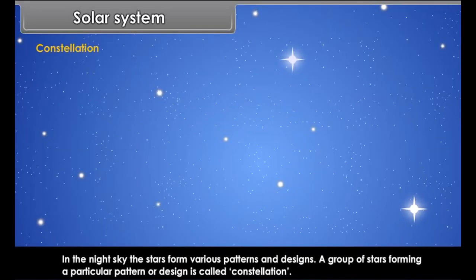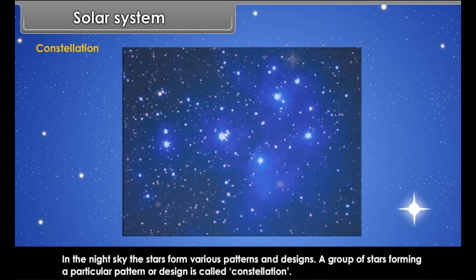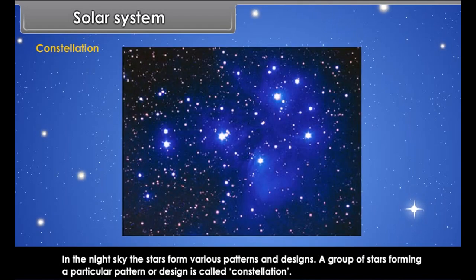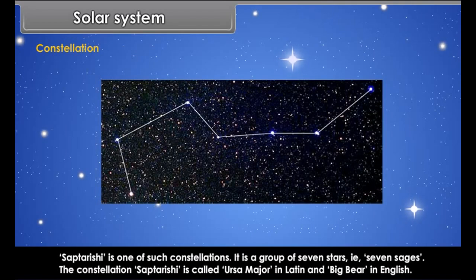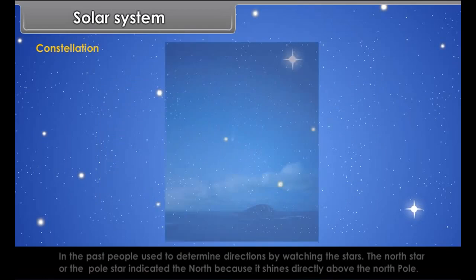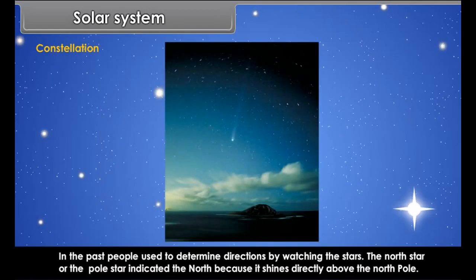In the night sky, the stars form various patterns and designs. A group of stars forming a particular pattern or design is called a constellation. Saptarishi is one such constellation — it is a group of seven stars, meaning seven sages. The constellation Saptarishi is called Ursa Major in Latin and Big Bear in English. In the past, people used to determine directions by watching the stars.